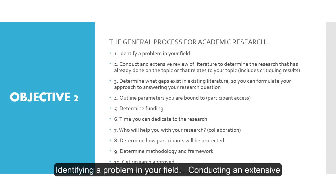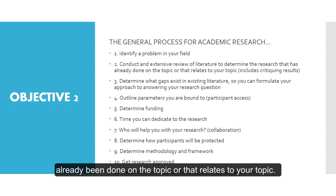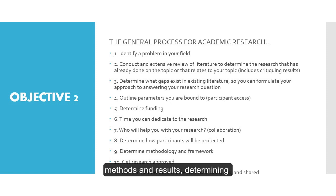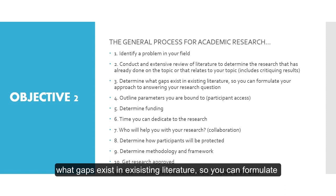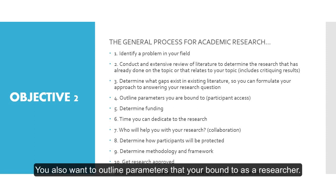We would define the general process of academic research as: identifying a problem in your field, conducting an extensive review of literature to determine the research that has already been done on the topic or that relates to your topic. This review is going to include you critiquing existing methods and results, and determining what gaps exist in existing literature so you can formulate your approach to answering your research question.